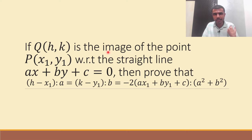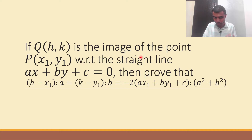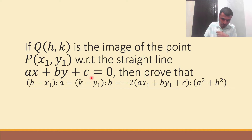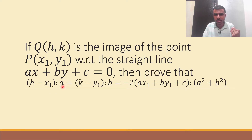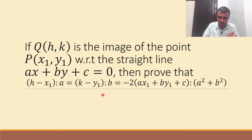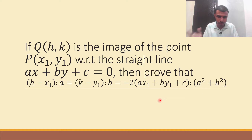The question is: if Q(h, k) is the image of the point P(x1, y1) with respect to the straight line ax + by + c = 0, then we have to show that h minus x1 by a is equal to k minus y1 by b is equal to that expression. I have to show it.